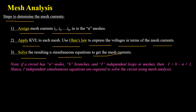Note that if you have a circuit with n number of nodes and B number of branches, and the circuit has L independent loops or meshes, then the number of independent loops equals the number of branches minus the number of nodes plus one. Corresponding to these L independent loops, we will have L independent simultaneous equations which are required to be solved for mesh analysis.